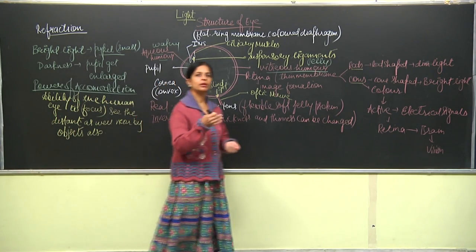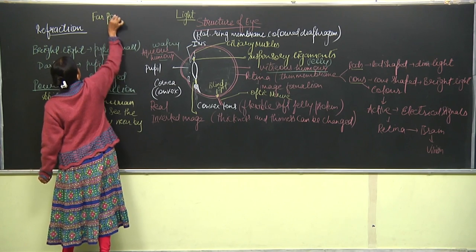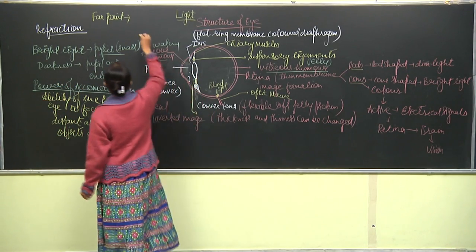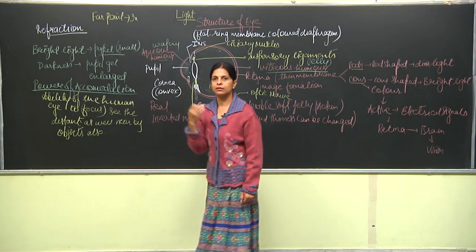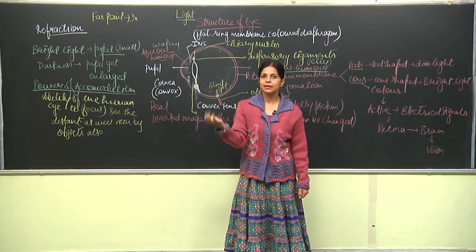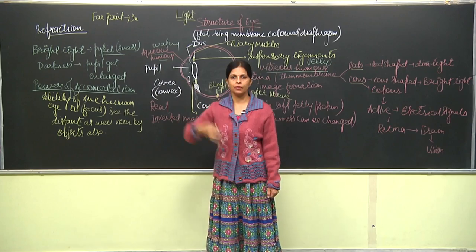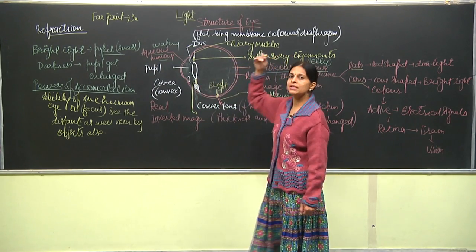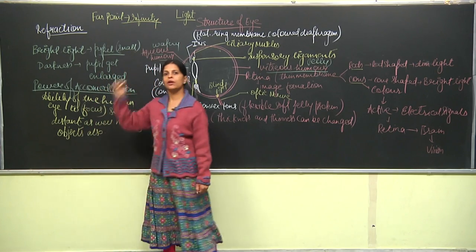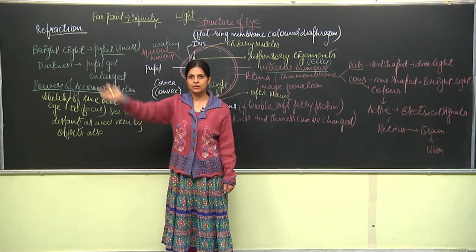When we talk about how far a human eye can see, this distance is known as the far point. For the human eye, this distance is infinity, because we can see very distant objects like the sky, sun, and stars. So the far point of a normal human eye is infinity.